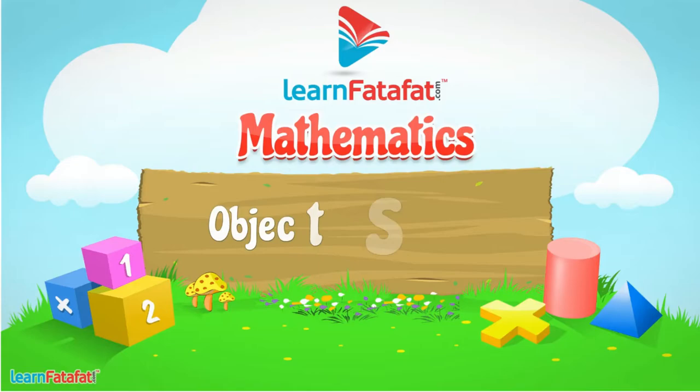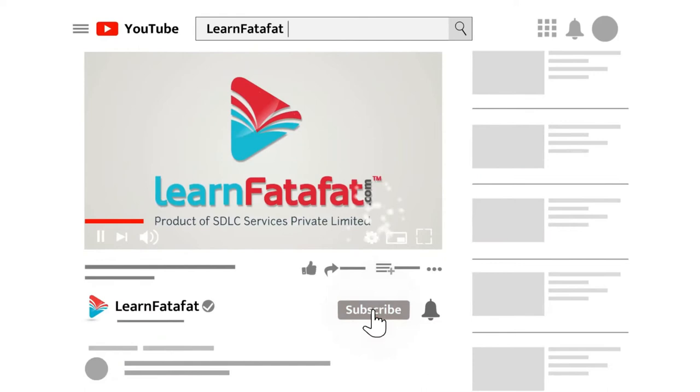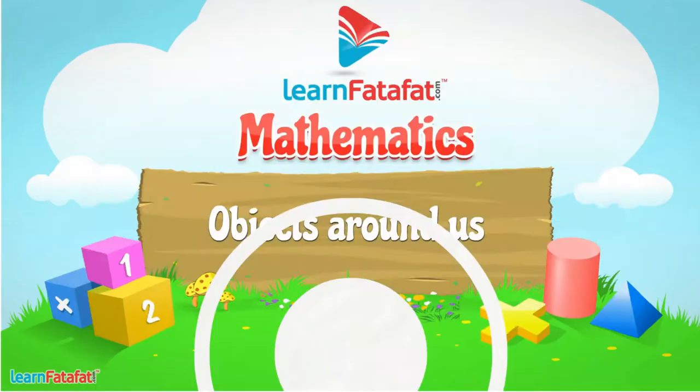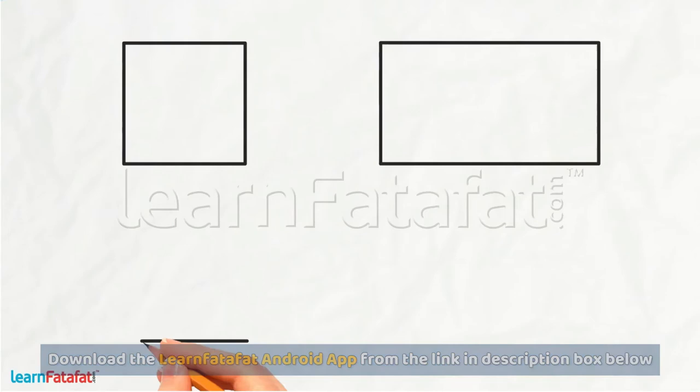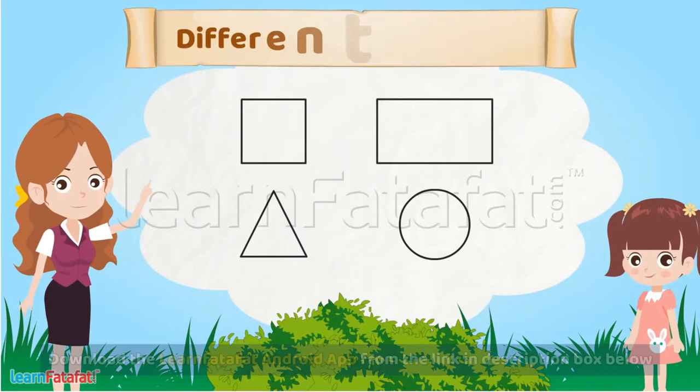Objects Around Us. Kavita has drawn some shapes on a paper. What are these things Kavita? These are different types of shapes. Shapes?